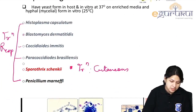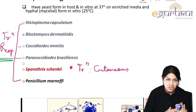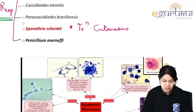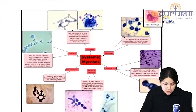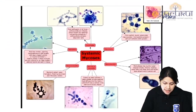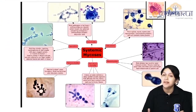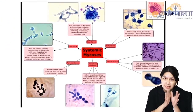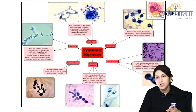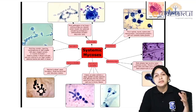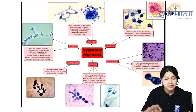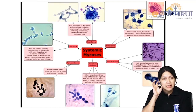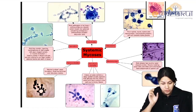Transmission of all dimorphic fungi is respiratory except Sporothrix, where transmission is cutaneous. All these fungi are identified by their typical classical characteristic yeast form from the specimen, and some by special cultural features.